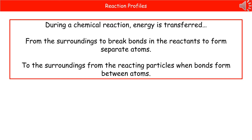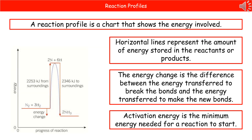During a chemical reaction, energy is transferred. Energy is transferred from the surroundings to break bonds in our reactants so that we get separate atoms, and then energy is transferred to the surroundings from the reacting particles when bonds form between the atoms. A reaction profile is a chart that shows the energy involved in a given reaction — horizontal lines represent the amount of energy stored in either the reactants or the products. The energy change is the difference between the energy transferred to break the bonds and the energy transferred when new bonds are made.